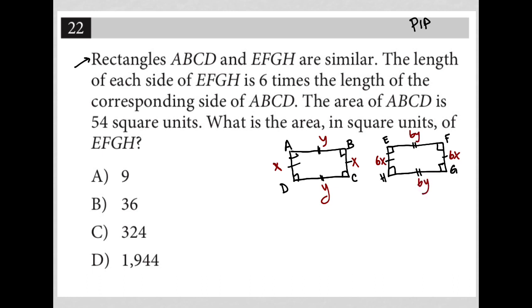The area of ABCD is 54 square units. How do I find the area of a rectangle? I just multiply the length times the width. In this case, X times Y or Y times X. So for us, we're going to say that XY is equal to 54.